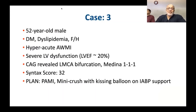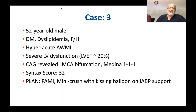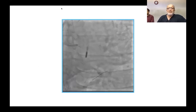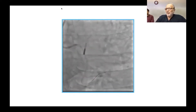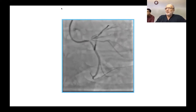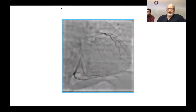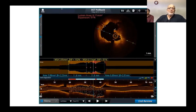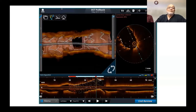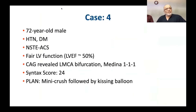A 52-year-old diabetic, dyslipidemic male with family history presenting with hyperacute anterior wall MI, severe LV dysfunction, LMCA bifurcation Medina 111, syntax score 32 — on intra-aortic balloon pump. Plan: mini crush with kissing balloon. Because it was an emergency we did not focus on distal crossing; we just recrossed and performed kissing balloon. Fortunately on OCT it was distal crossing and link-free carina with a clean result.